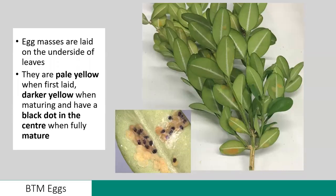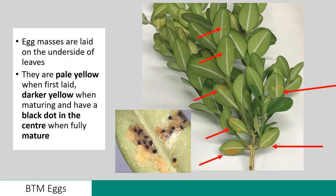Starting with the egg masses — these can be difficult to scout for due to their colour and flat profile against the surface of the leaf. However, there are a few tips to help identify them. Egg masses are most commonly laid on the underside of leaves, so by lifting up a branch of the boxwood you can often get a good look at those undersides. They vary in colour: when first laid they're a pale yellow, but as they mature they darken. Right before the larvae hatch, there's a visible black dot in the centre — this is actually the head capsule of the larva visible through the egg sac, which you can use to help ID the eggs.